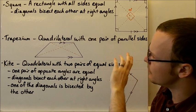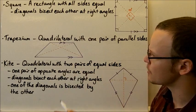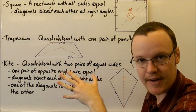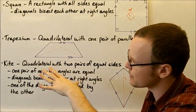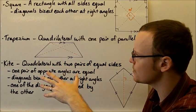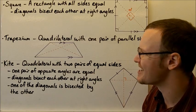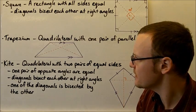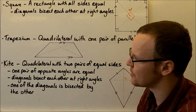Looking at a trapezium next — a trapezium isn't really related to any of the other regular quadrilaterals. It is a quadrilateral with one pair of parallel sides, and it doesn't really have any special properties apart from those parallel sides.